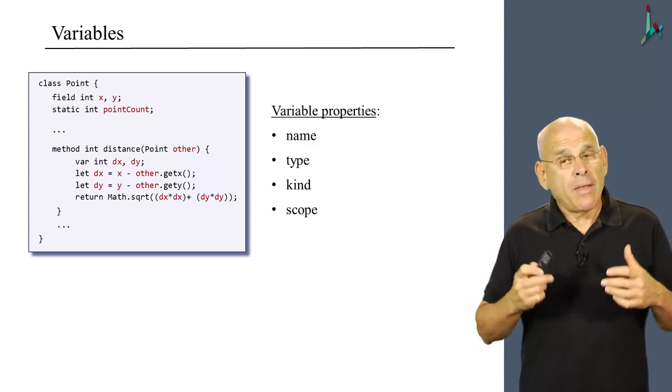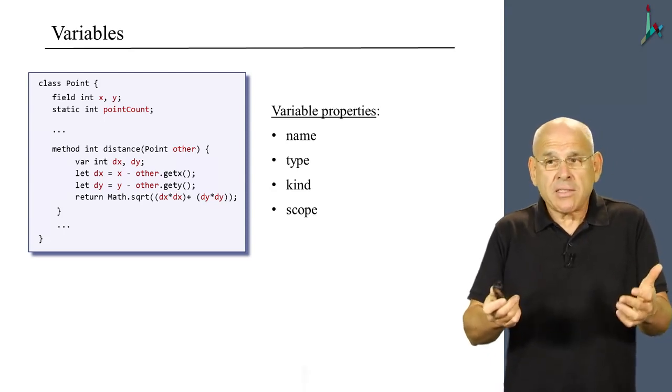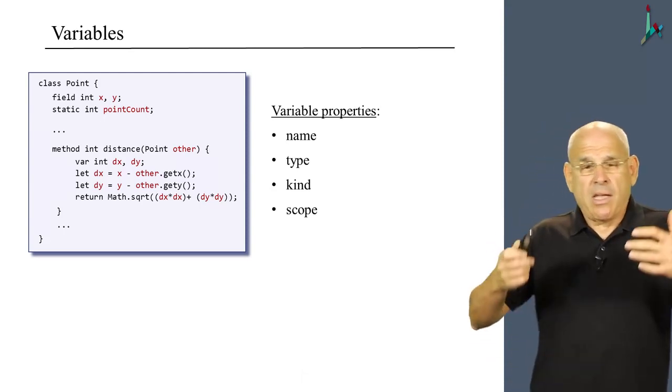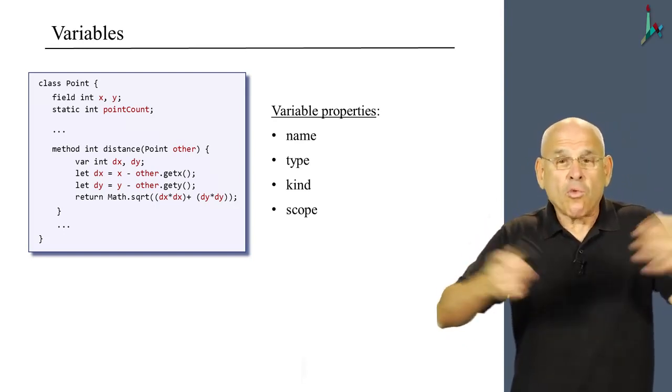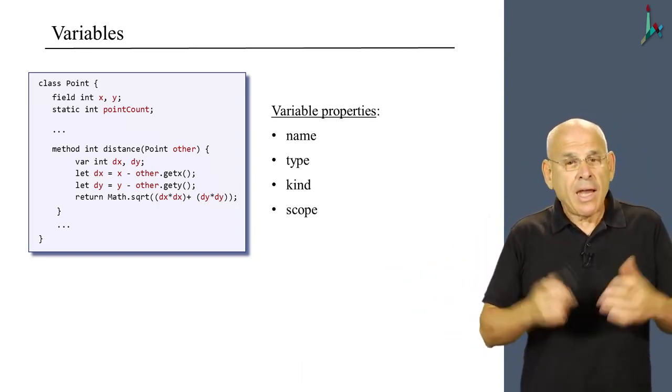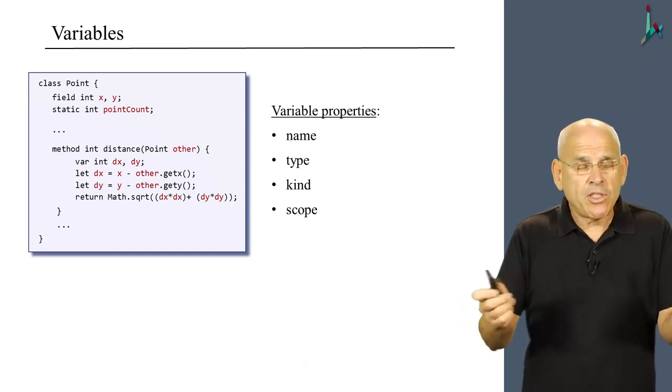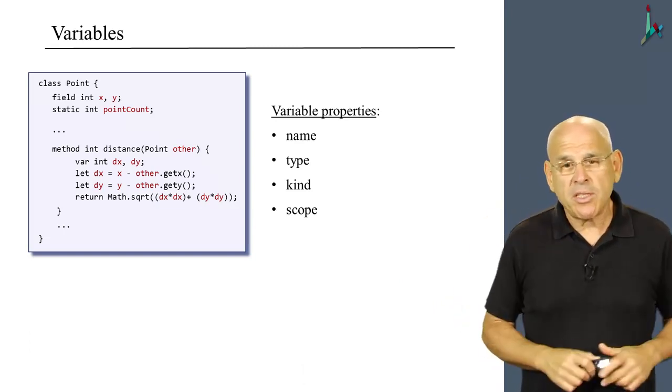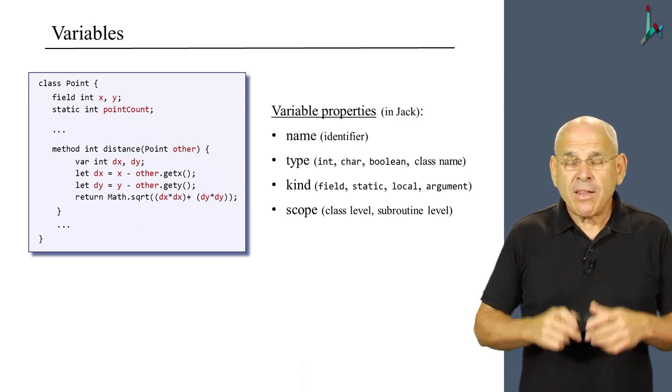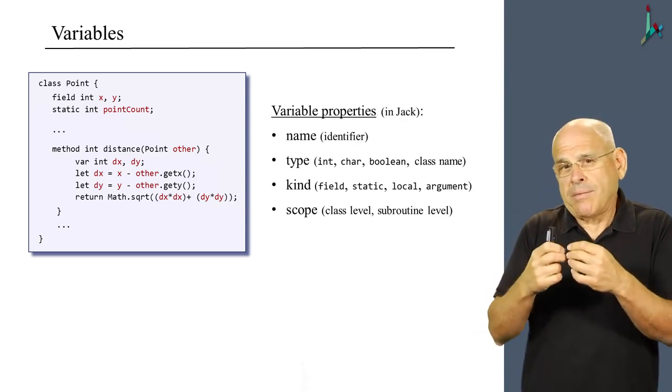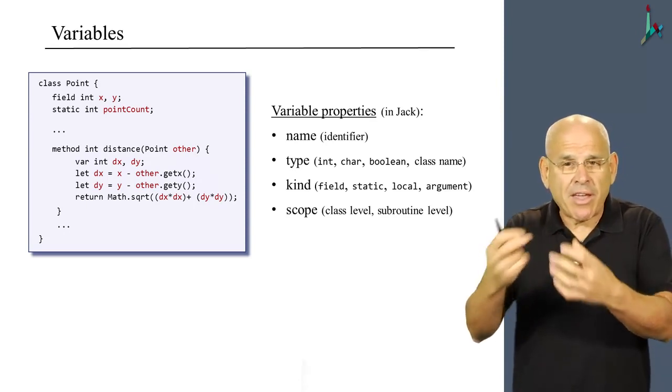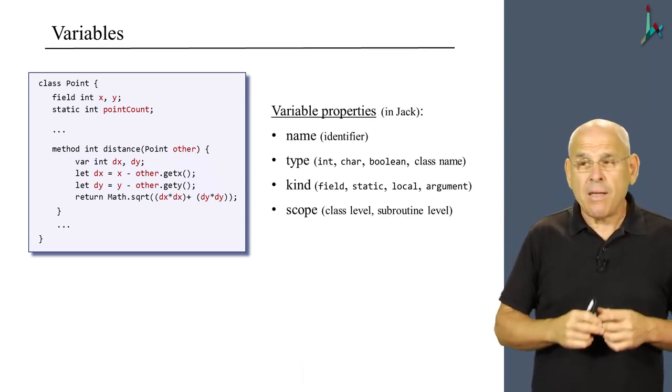So every one of these variables has some properties. It has a name, it has a type, it has a kind or role in the program. And it has a scope, which is the region of the code in which this variable is recognized. Now, in the Jack language, we have more specific documentation or specifications of what each one of these things mean.